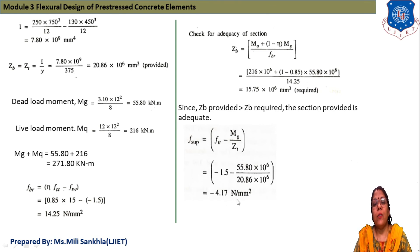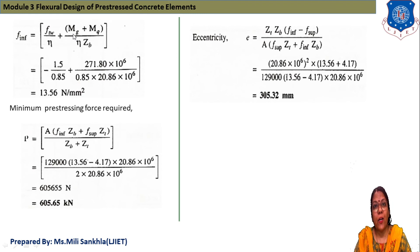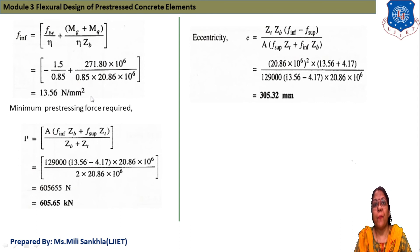Top fiber stress at transfer: f_sup = f_tt − M_G/Z_t = −1.5 − (55.80 × 10⁶)/(20.86 × 10⁶) = −4.17 N/mm². Bottom fiber stress: f_inf = f_tw/η + (M_Q + M_G)/(η·Z_b) = 13.56 N/mm².